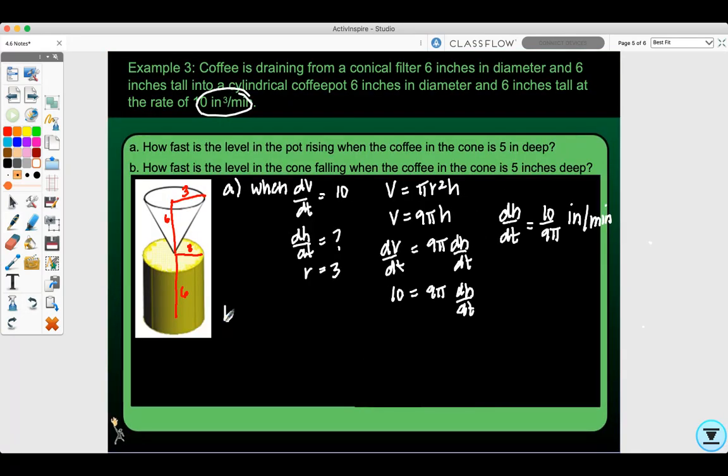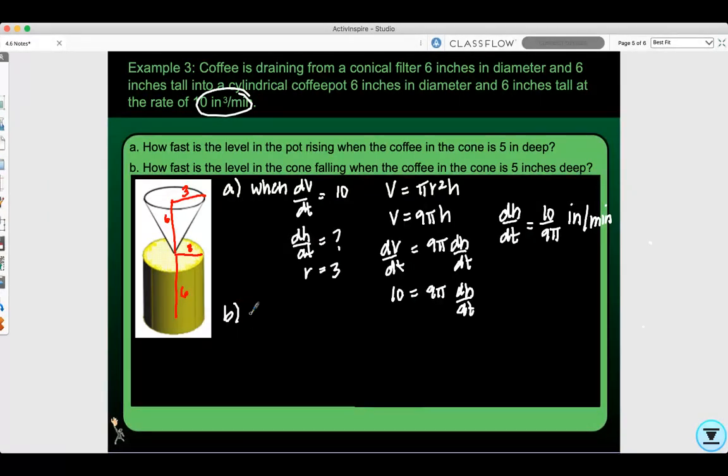For part B, dV/dt is negative 10 because the coffee is leaving the cone. We need to come up with a formula for the radius, because the volume of the cone is different. The volume of a cone is 1/3 πr²h. With the cone, the radius isn't constant as the level goes down, unlike the previous example.